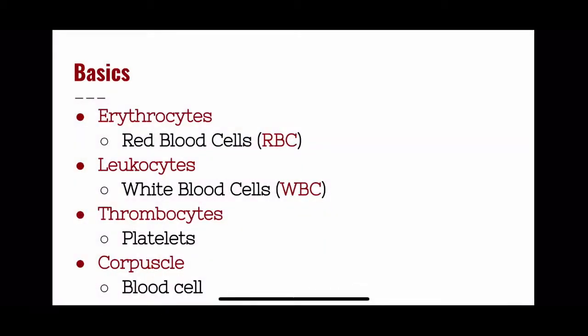Before we get into any actual disorders, we are going to talk about some of the basics. Your blood is made up of four different parts: plasma, which is the liquid part of your blood; erythrocytes, which is the scientific term for red blood cells; leukocytes, which is the scientific term for white blood cells; and thrombocytes, which is the term for platelets.